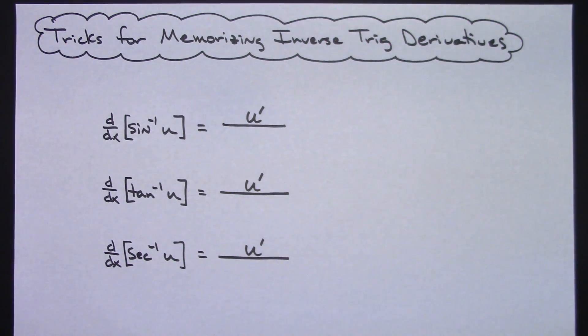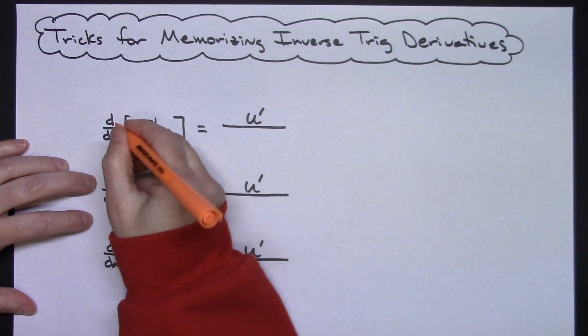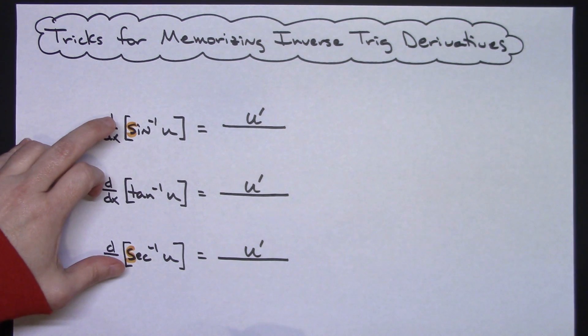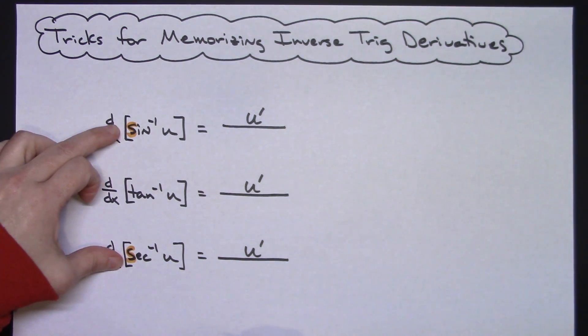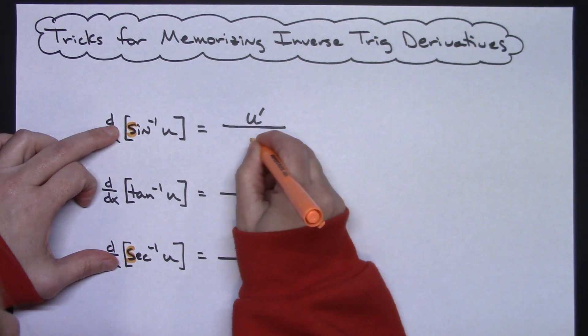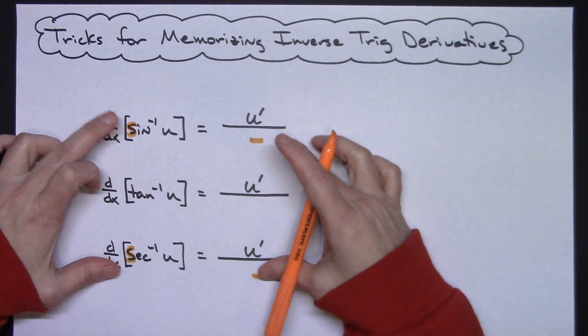Now at this point what I would do is I would start using the mnemonics to help doing the memorizing here. For your sine and your secant, they both start with an S. So for me the S is going to remind me that I need subtraction. So that means this one's going to have subtraction and this one's going to have subtraction. So I would probably put those in because they correspond to my S's.